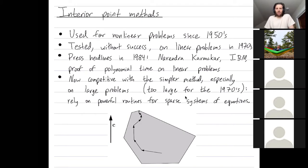You'll remember that I read some press release a couple videos ago about the ellipse method. The next time that linear programming really made the headlines was in 1984, when Narendra Karmarkar from IBM gave a proof that interior point methods also give polynomial time algorithms on linear problems.